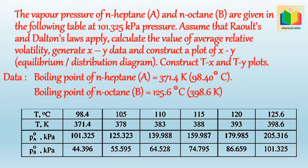In this example, we are given data of vapor pressures of N-heptane (A) and N-octane (B) at various temperatures. From this data, we compute vapor-liquid equilibrium data and construct a T-X-Y plot. Using the vapor pressure data, we calculate alpha — the relative volatility — at different temperatures, which gives us the relation between Y and X in terms of alpha, allowing us to generate X-Y equilibrium data.